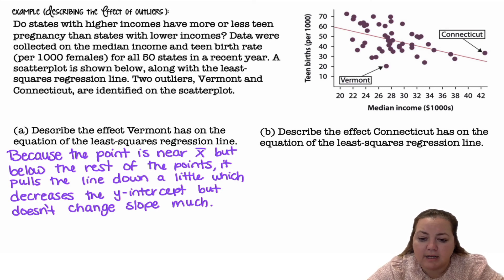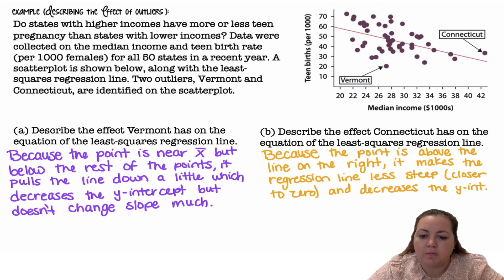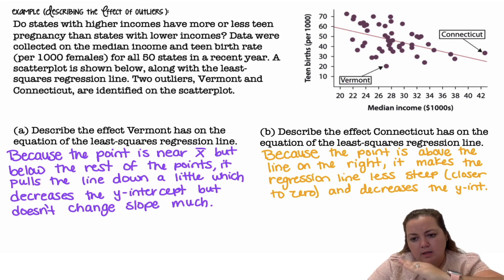Part B, describe the effect Connecticut has on the equation of the least squares regression line. All right, so because this point is above the line and on the right, it's further out on the x-axis, it makes the regression line less steep. It's pulling it up, pulling the line up, the slope of it, making the slope closer to zero, and it decreases the y-intercept. This point here, when it's going down, the y-intercept goes down and the slope gets closer to zero.